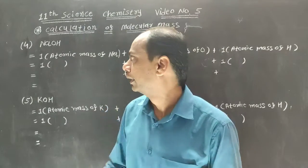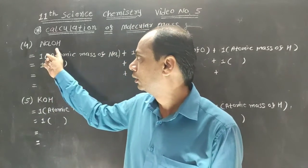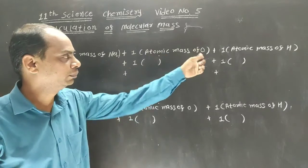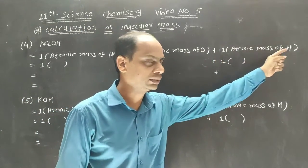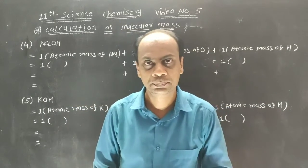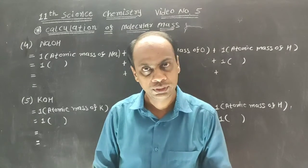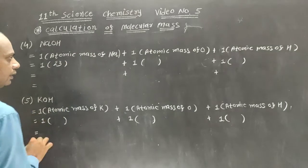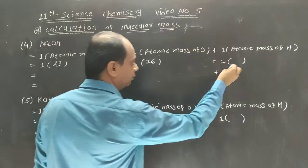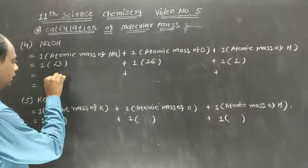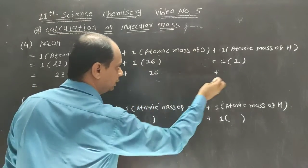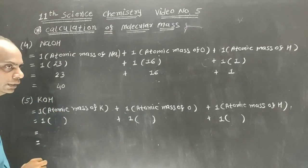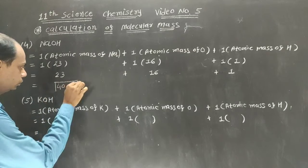Now let us start example number 4: sodium hydroxide (NaOH). All atoms appear only once. So: 1 times atomic mass of sodium, plus 1 times atomic mass of oxygen, plus 1 times atomic mass of hydrogen. Sodium has atomic number 11, which is odd — multiply by 2 to get 22, add 1 to get 23. Oxygen is 16. Hydrogen is 1. Adding: 23 plus 16 plus 1 equals 40u — unified mass.